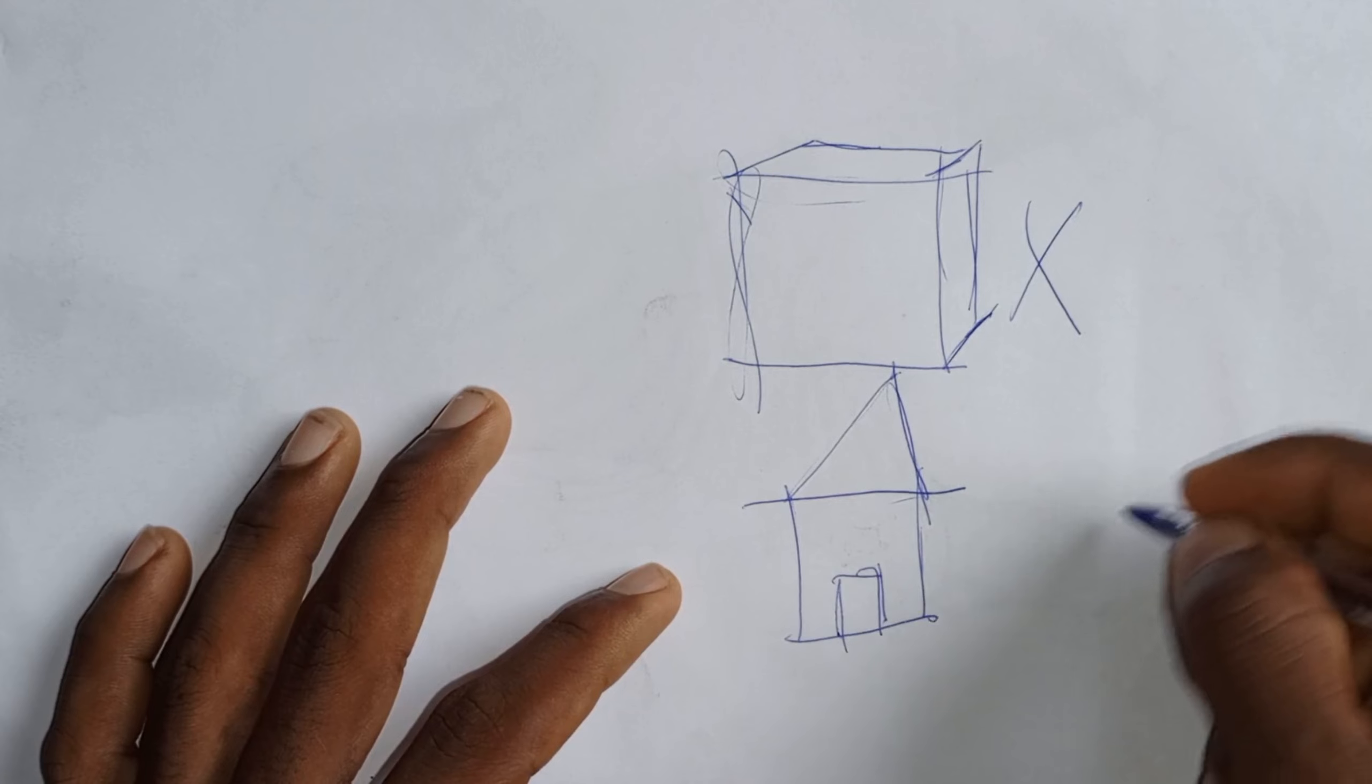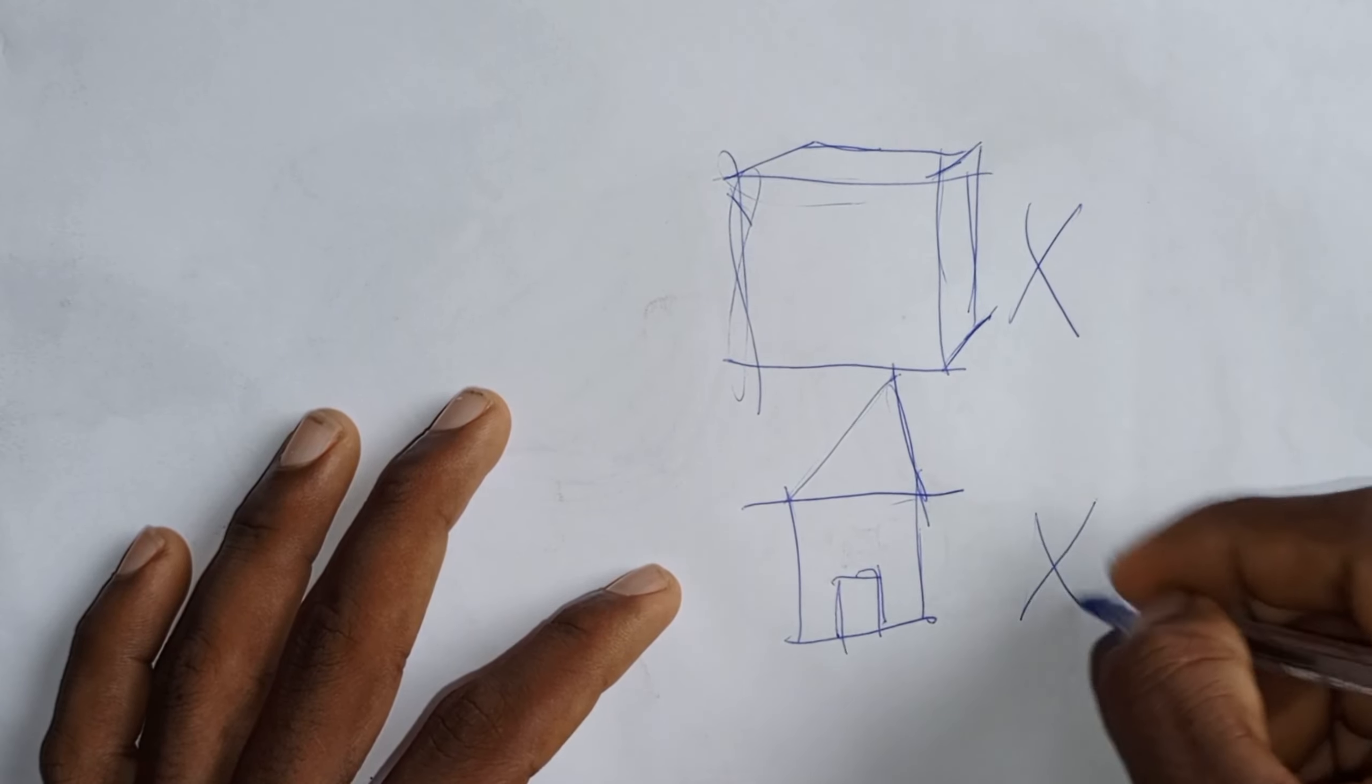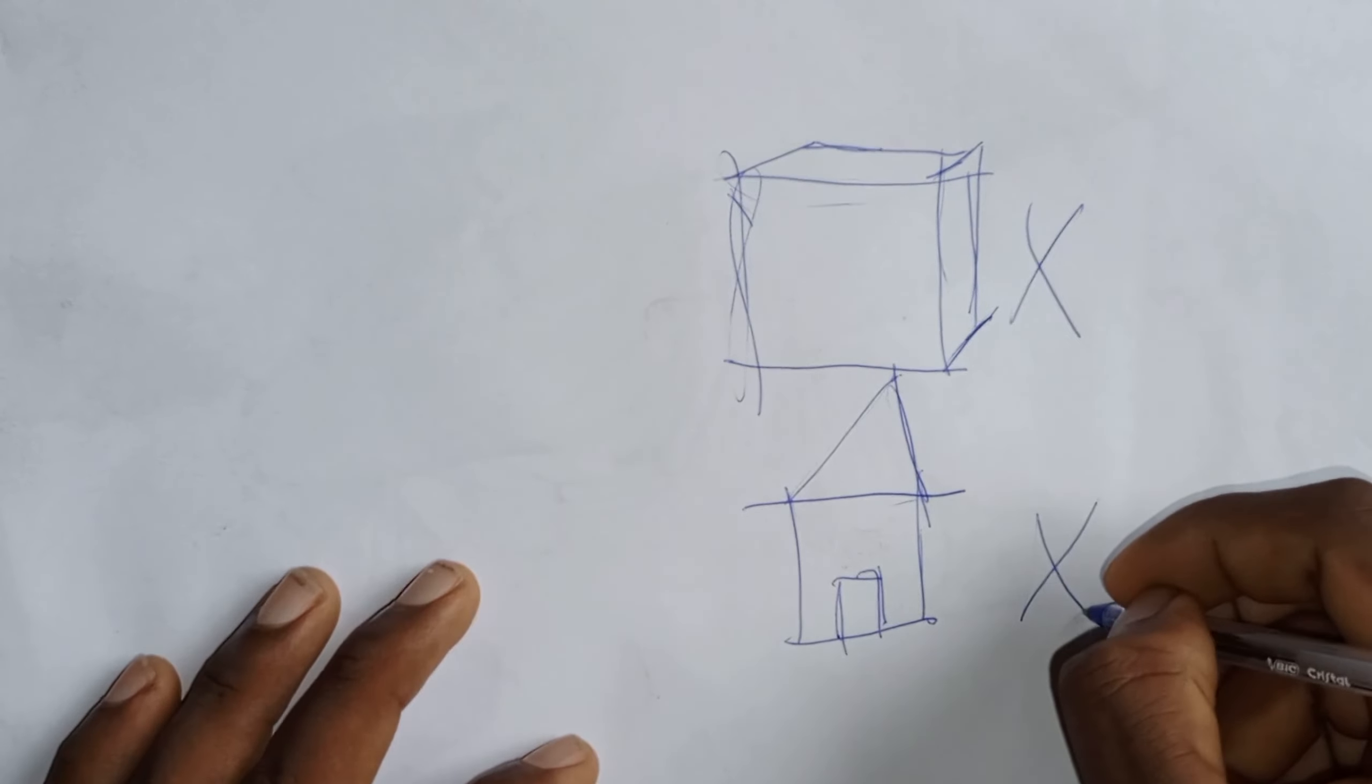I think a lot of beginners struggle with this too. Understanding the vanishing points and how to create the illusion of distance on a 2D piece of paper can be really tough. It's easy to get overwhelmed by all the technical terms and concepts. But don't worry, we're going to tackle all of that in this tutorial and I promise it's going to be easier than you think.